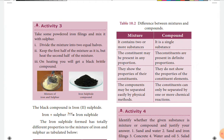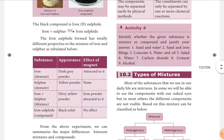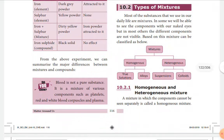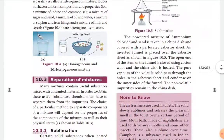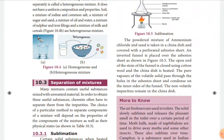Compounds are single substances, while mixtures contain two or more substances. Types of mixture: homogeneous and heterogeneous. Homogeneous means components cannot be seen separately, but in heterogeneous mixtures components can be seen separately. We also learned the separation methods of mixtures.